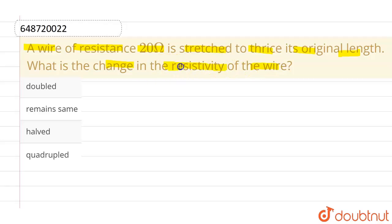This is not asking about resistance, this is asking about the change in resistivity of the wire. Now, as we know that resistance R is given by ρL/A - rho L divided by A.